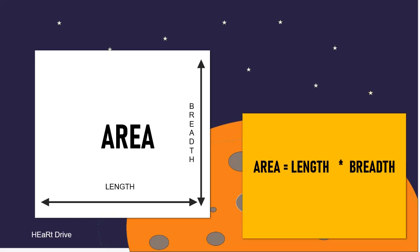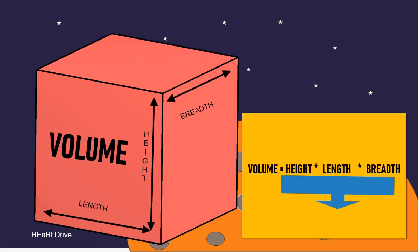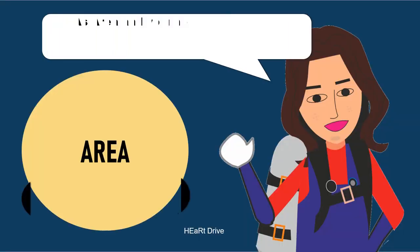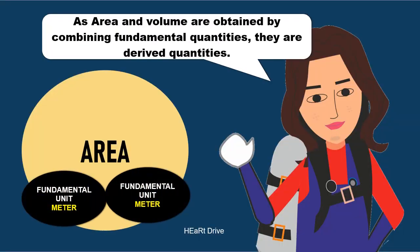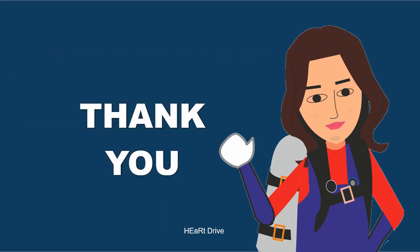Area is a combination of length and breadth, so the unit of area is meter squared. Volume is equal to length times breadth times height, so the unit of volume is meter cubed. As area and volume are obtained by combining two or more fundamental quantities, they are derived quantities. Thank you.